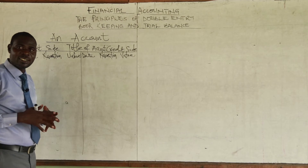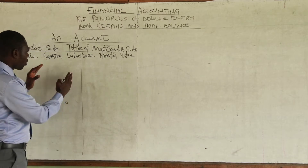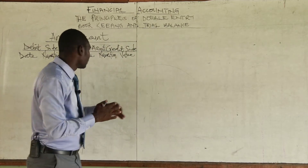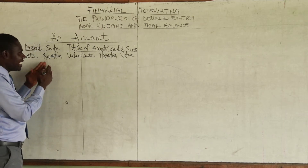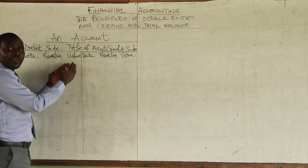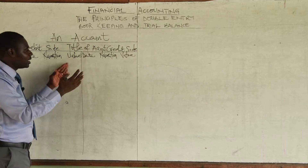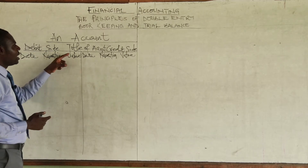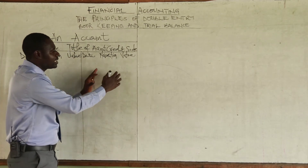To every debit entry there must be a corresponding credit entry. So if you record a debit entry in one account, you must record a credit entry in another account. The name or title of the account receiving the credit entry is written in the narration column.